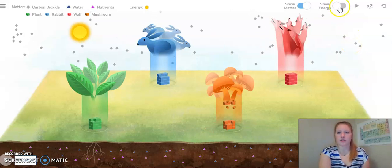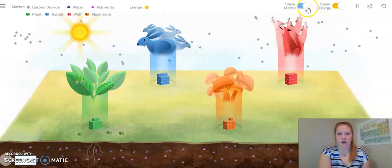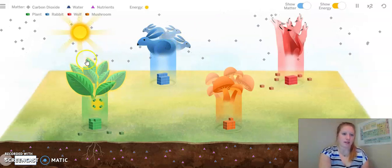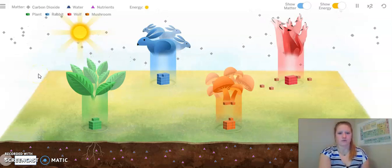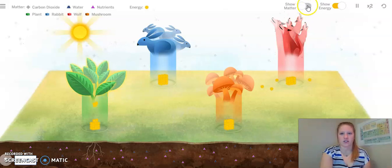Okay, now I'm going to show the energy. And I want to see where the energy and the food matter is coming from. So our food matter is going to be our rabbits, our plants, and our sun. So let's focus on just the energy.